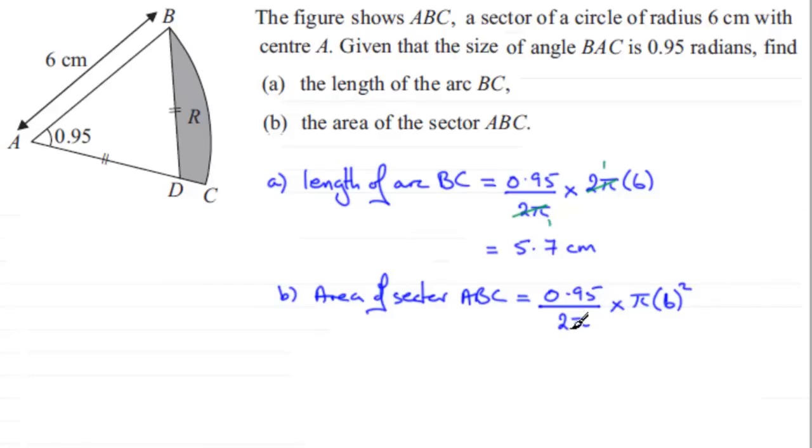The π's cancel out in this particular example, giving us the angle times the radius squared over 2. Some people will think of this as half θr², or half r²θ. But you can only use this formula when you're working in radians. If it was an angle in degrees, it would be the angle over 360 degrees times πr².